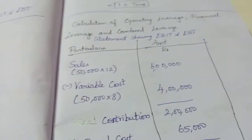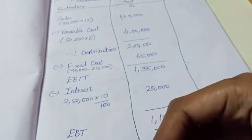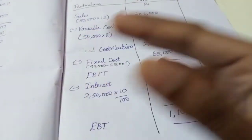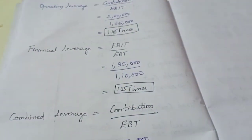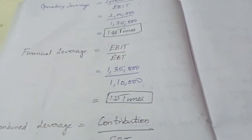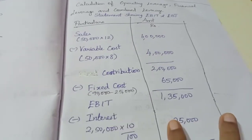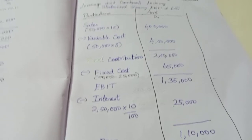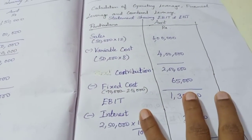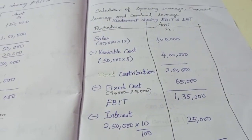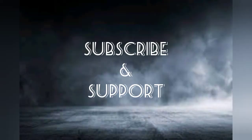This is how we calculate operating leverage, financial leverage, and combined leverage. First we prepare the statement, then formulas are applied, and we substitute the values to calculate the results. I hope this session was helpful in understanding how to calculate the three types of leverage. Please like and subscribe. If you have any doubts, please comment. Thank you so much.